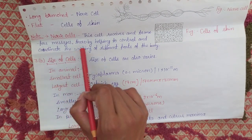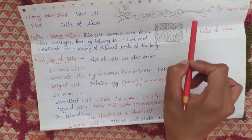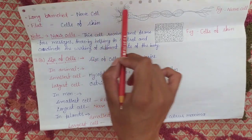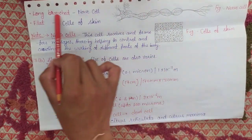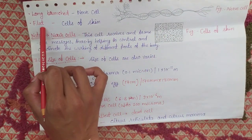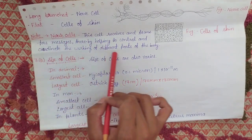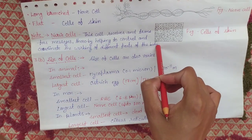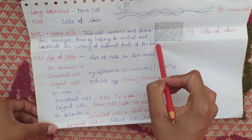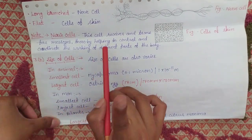That is about the nerve cells. You have to make two figures: the figure of the long branched nerve cell in front of that topic, and the figure of flat skin cells in front of that topic. After that, you have to write this note also. Third part A — shapes of cells — is completed here.